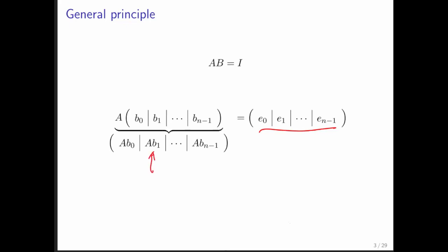So now we can go and say, typical column on the left must equal a typical column on the right, and therefore A times the jth column of the inverse of A must equal the jth unit basis vector.